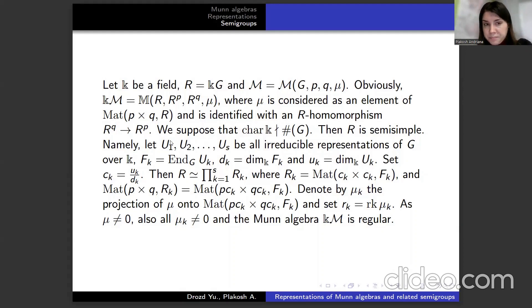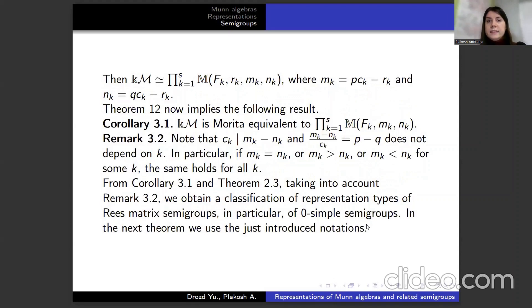Let u₁, u₂, ..., uₛ be all irreducible representations of G over k. Then R is a product, where Rₖ is a matrix, and the matrices are induced by μₖ, the projection of μ onto the components. As μ not equal to zero, also all μₖ not equal to zero, and the Munn algebra k[M] is as described.